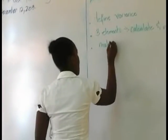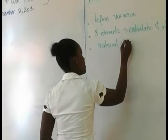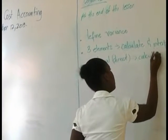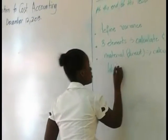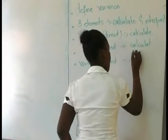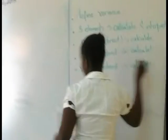We're going to explore the three elements. What are the three elements? We have direct material, direct labor, and variable overhead. These are the three objectives for today's class — today's topic will be focusing on variance analysis.